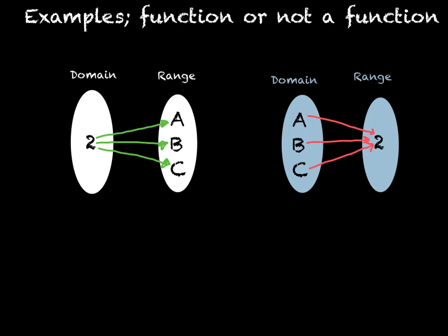So if we do a few examples here, we need to decide if these are functions or not a function. So these are mapping diagrams, and there are two separate examples here. In this first one, the domain, or the x values, are 2, and that's it. And the y values, or the range, is a, b, and c. So this 2 goes to a, 2 goes to b, and 2 goes to c. So that means that the two, the same x value, is going to multiple y values. Because one x is going to more than one y, that means it is not a function.